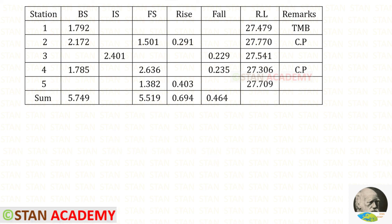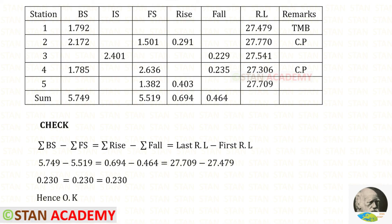Then we can find the reduced levels. This plus this, we will get this. This minus this, we will get this. Then this plus this, we will get this. Finally, we have to apply the check. For all three of them, we will get the same value. Hence, okay. Now we are going to end this session. Thank you for watching this video.